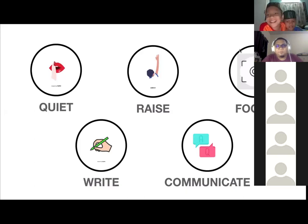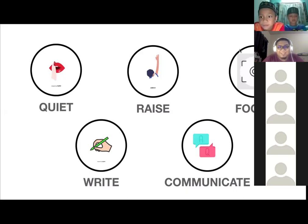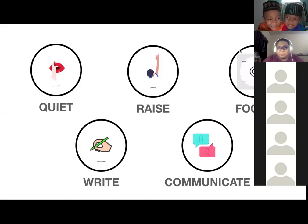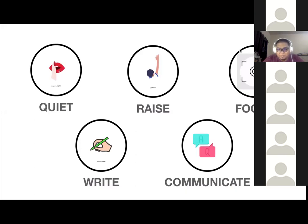There are five rules during the lesson. First, you have to be quiet during the explanation. Number two, raise your hand if you have any question or to show that you have done your job. Number three, please focus during the class and make sure there are no noises around you. Number four, write down the notes you can see on the screen. Number five, communicate during the lesson and take part in the learning activity. That's all for the five rules you need to comply with.